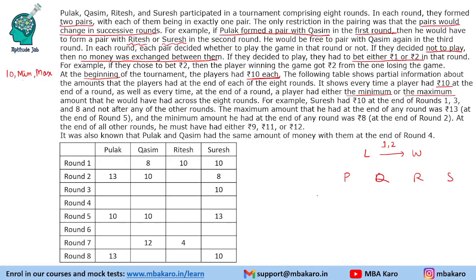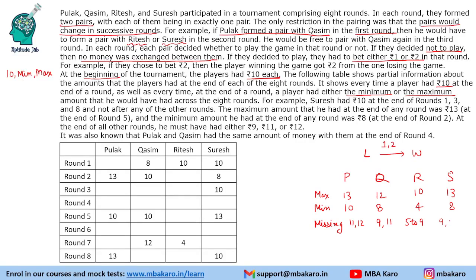We have 4 players P, Q, R, S. We can fill their max and minimum values. Max value for Pulak is 10, with another value 13, and minimum is 10. Kasim's minimum is 8 and maximum is 12. Ritesh's maximum is 10 and minimum is 4. Suresh's maximum is 13 and minimum is 8. The missing values for P could be 11 or 12; for Kasim, 9 or 11; for Ritesh, 5 to 9; and for Suresh, 9, 11 or 12.